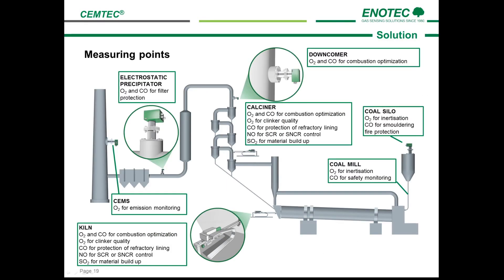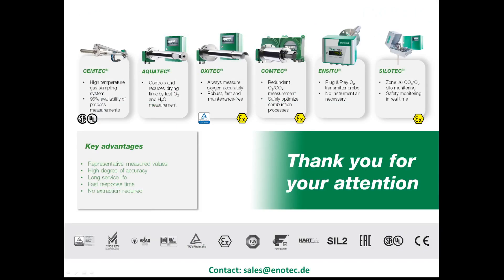Before we finish, here's a quick overview of the products which Enotech has to offer for cement plants. Here we have the CEMTEC probe. Here is SILOTEC, which measures O2 for inertization and CO for smoldering fire protection in the coal silos. Furthermore, COMTEC is a fast in-situ measurement for O2 and CO at the downcomer for second stage combustion optimization at the preheater tower, and we also recommend it to protect the electrostatic precipitator. Finally, we have O2TEC for an in-situ oxygen measurement for the SEMS measurement. Thank you very much for your valuable time — don't hesitate to contact Enotech if you have any questions regarding the CEMTEC system.